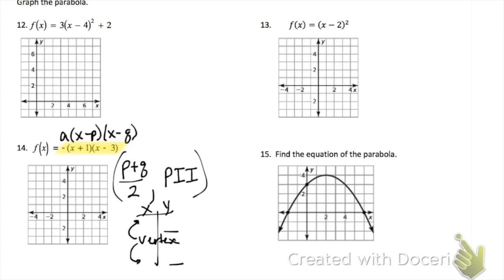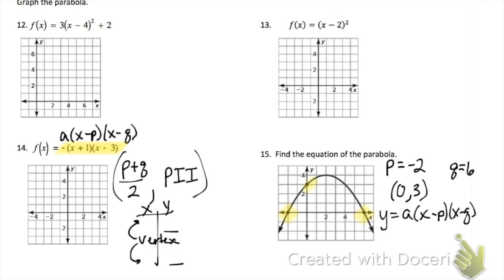Problem 15 asks us to find the equation of the parabola. We look for the intercepts — P and Q — and an extra point. P is negative 2, Q is 6, and our extra point is (0, 3). We'll use P, Q, and the extra point in the intercept form equation. Plug in a value for Y, X, P, and Q, then solve for A. Once you get your value for A, put it in the equation and your final answer will look like that form.